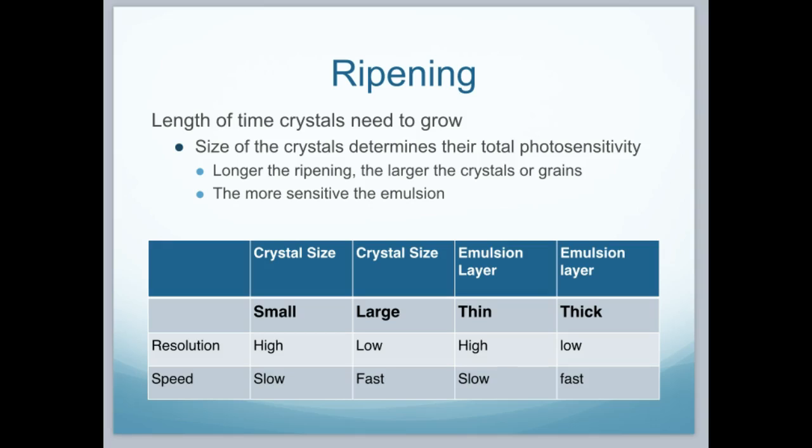Looking at ripening: crystals are something we have to grow, and the length of time the crystals need to grow is considered ripening. This determines the size of the crystals and their total photosensitivity. The longer the ripening, the larger the crystals — the larger the grains — and the more sensitive the emulsion will be.